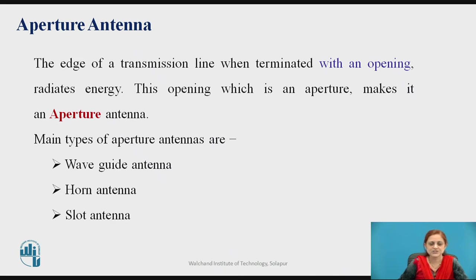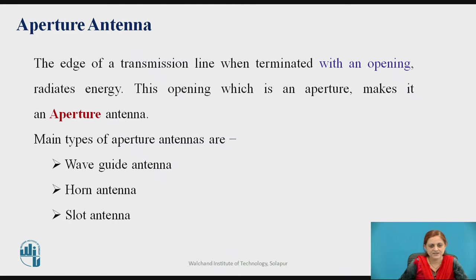Let us discuss the definition of the aperture antenna. The end of any transmission line when terminated with an opening at the end side which radiates the energy — this opening, which is an aperture, makes the aperture antenna. There are three main types of aperture antenna: waveguide antenna, horn antenna, and slot antenna.